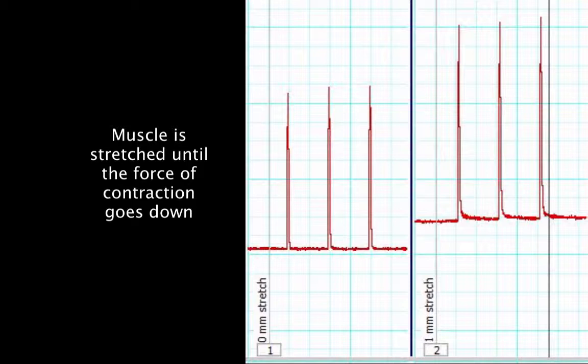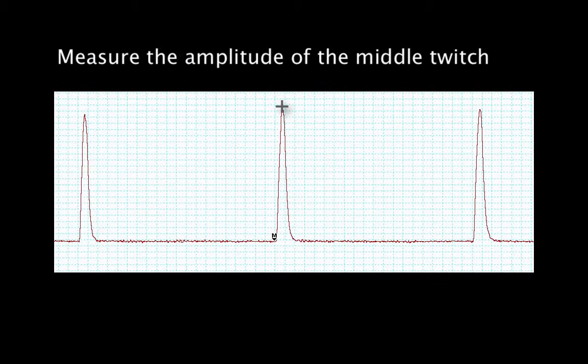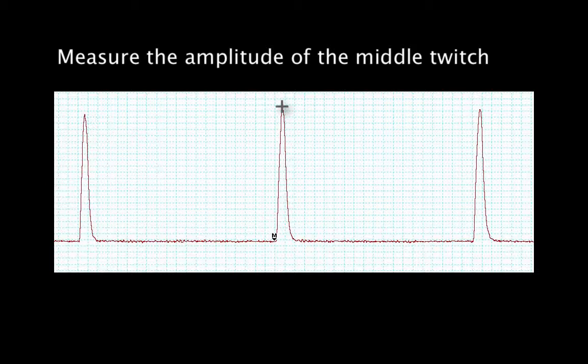To generate a length-tension relationship, the muscle starts relaxed and is stretched in one millimeter increments, and the force of contraction at each of those one millimeter increments is measured and recorded. For every millimeter of stretch, there are three twitches, and the amplitude of the middle twitch in each case is measured. When the force goes down, then recording stops.